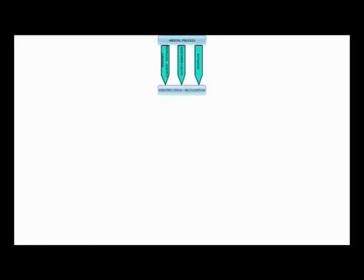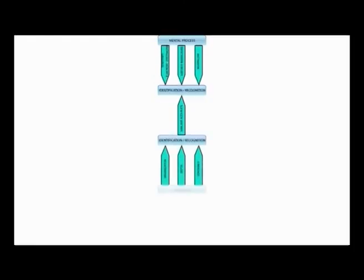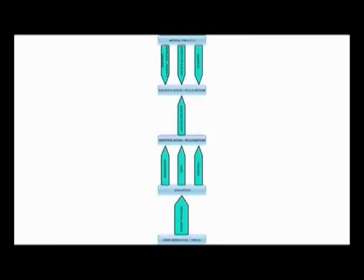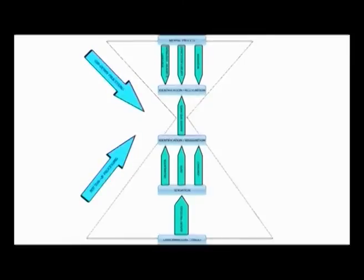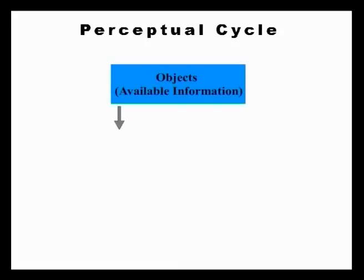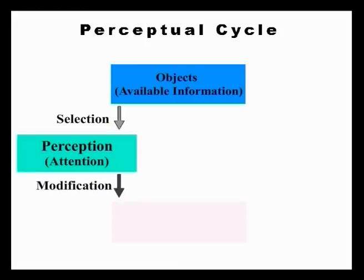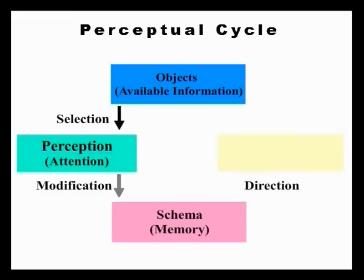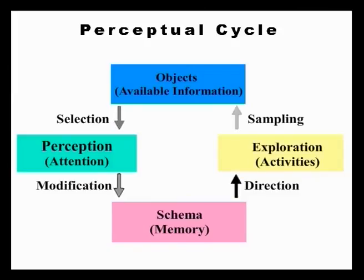Let us now talk about Neisser's Perceptual Cycle. In 1976, Hugh Neisser proposed a model integrating the bottom-up and top-down processes into a cyclic process. This model focuses on perception, attention, and categorization. While perceiving an object, one selectively attends to the available information. This is further modified by anticipatory schemata. What is also important in perception is that any percept can be categorized as figure and background — the pattern that becomes the focus of attention becomes the figure, while the backdrop against which it emerges becomes the background.